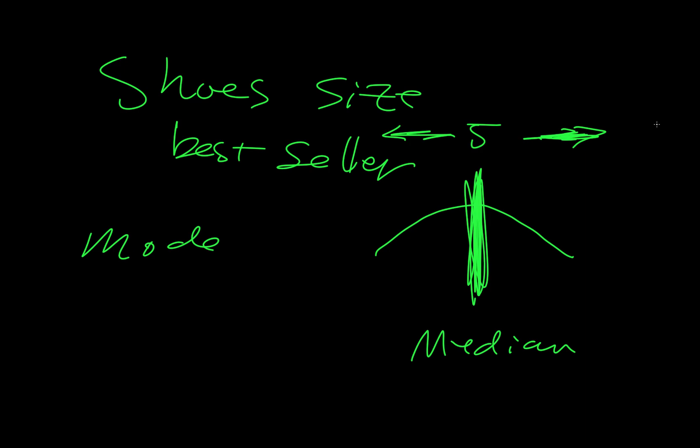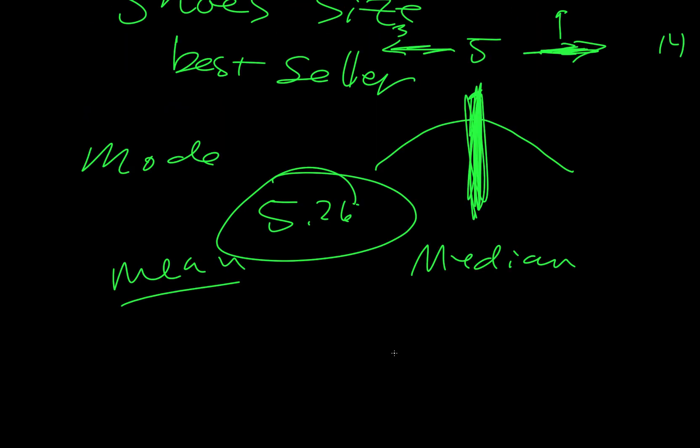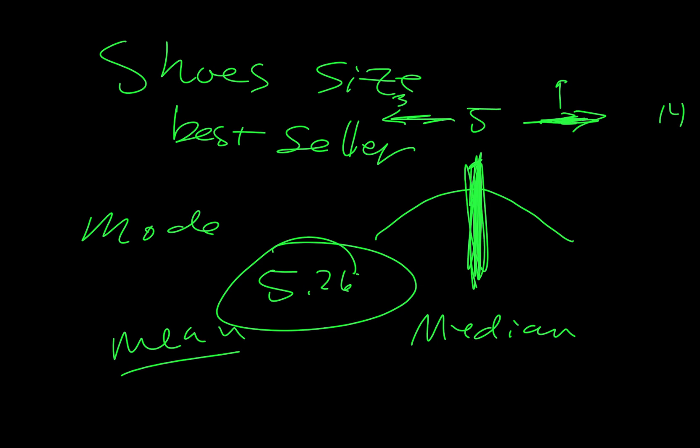So maybe we don't want to go up to a 14 because that's too big. Maybe we're going to stay closer to a 9, and over on this side maybe we'll stay closer to a 3. You know, it can sort of tell us that information. Now the median, or whoops sorry, the mean isn't useful because we could get an answer like 5.26 and we're like, that's not an actual shoe size.